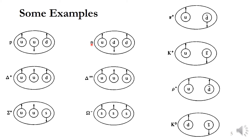For the neutron, you can see this is UDD — one U quark and two D quarks. That is why the charge is 0: U has +2/3, and D has -1/3, and the second D is again -1/3, so the net charge is 0. The spin: U is +1/2, one D is -1/2, and the other D is +1/2, so the net spin is +1/2. The strangeness is again 0, and the baryon number is again 1, since all three quarks have baryon number 1/3.